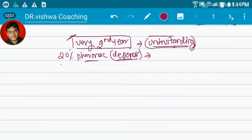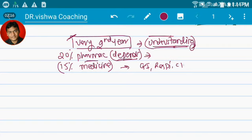20% of pharmacology depends upon this. About 15% of medicine depends upon this in third year. So unless you understand this, I can say it is responsible for understanding GI system, respiratory system, even the nervous system, even the other systems. So this part of the nervous system which we are going to take right now will be very important for your understanding.